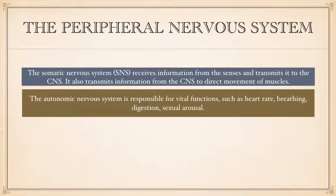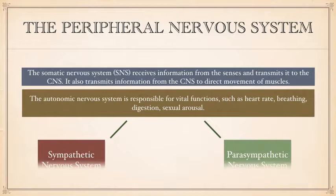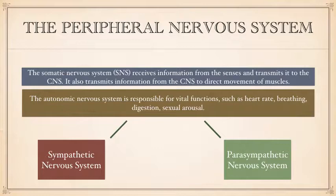You've also got the autonomic nervous system, which is responsible for vital functions such as heart rate, breathing, digestion, sexual arousal, and your stress responses. The autonomic nervous system is made up of the sympathetic nervous system and the parasympathetic nervous system, and it's these two different systems that we need for our primary stress response, also known as the fight-or-flight response.